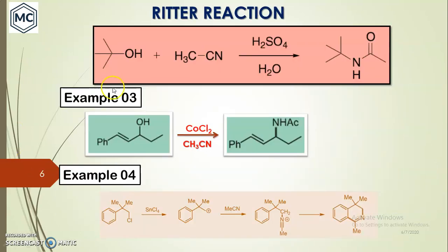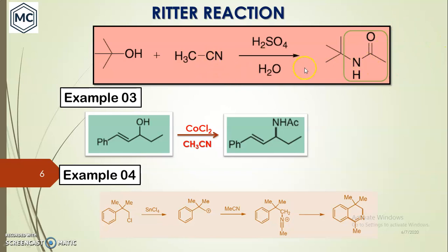Let us see in the Ritter reaction what changes occur for the alcohol. The O-H group gets substituted by an N-H-C-O-CH₃, that is an acetylamide group. This N-H-C-O is generated from the C≡N nitrile.